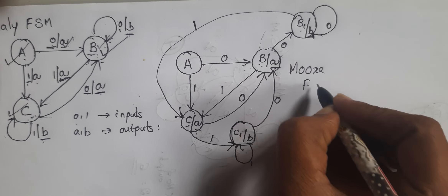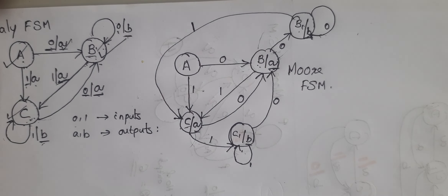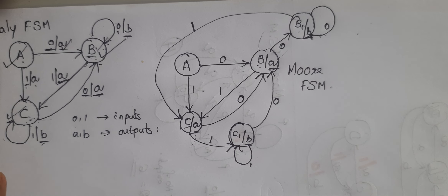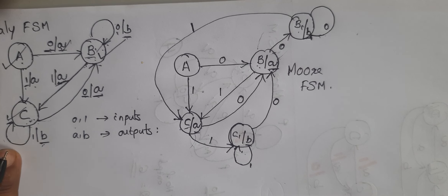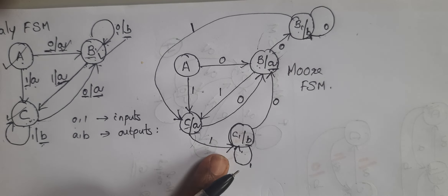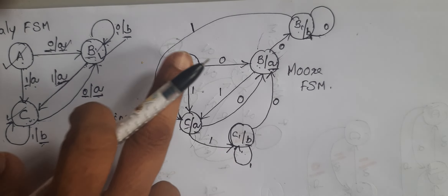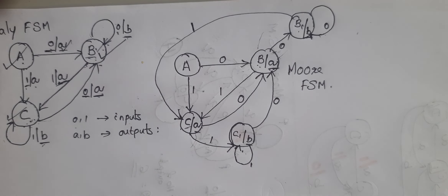This is the Moore FSM. Here the number of states has increased — for the Mealy FSM it requires only 3 states, but here it requires 5 states. So in Mealy-to-Moore conversion, more number of states are required.